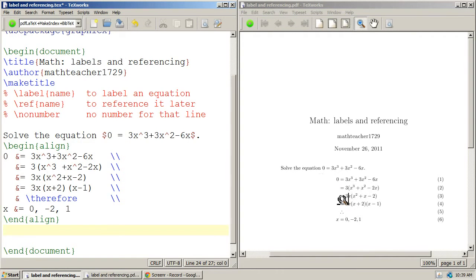We factored out a 3, we factored out an x, then we factored the x squared plus x minus 2, and then we figured out what the answers were.